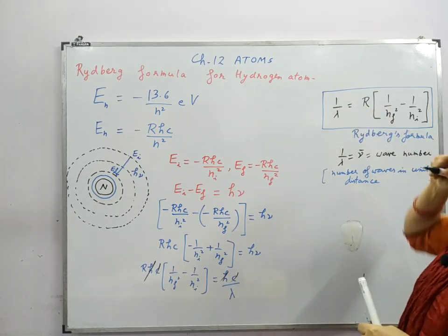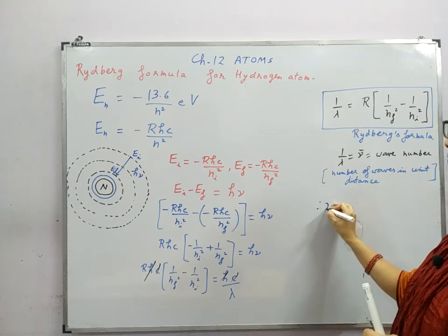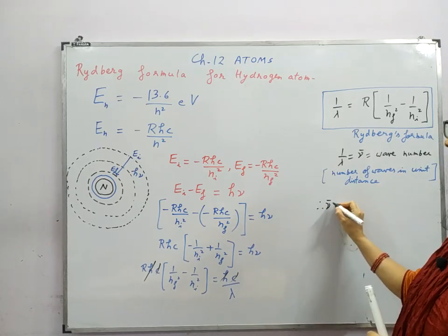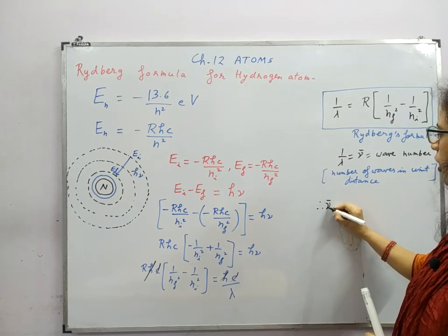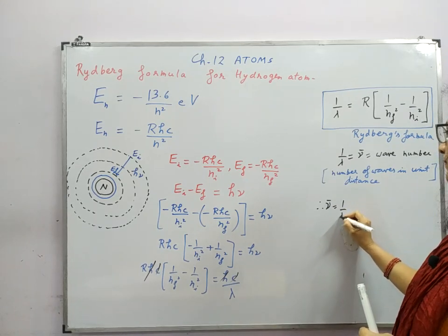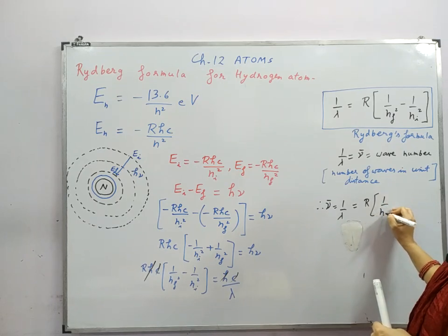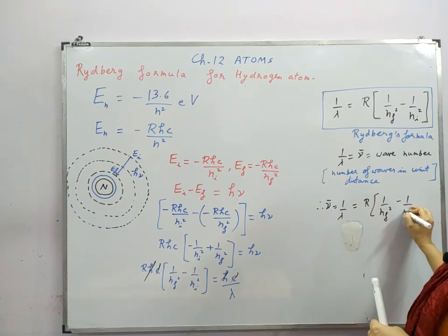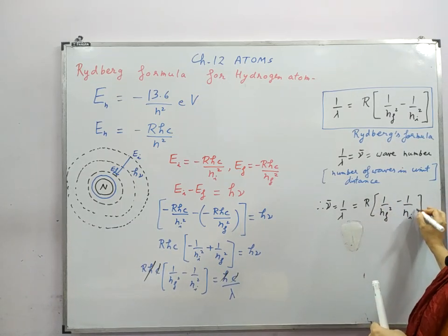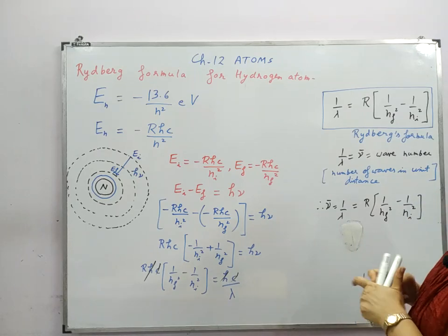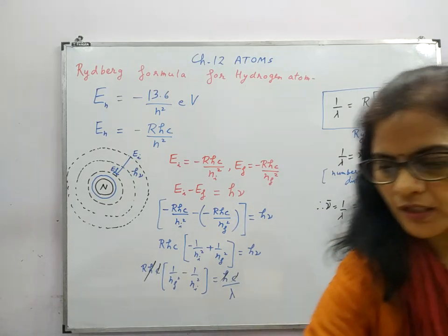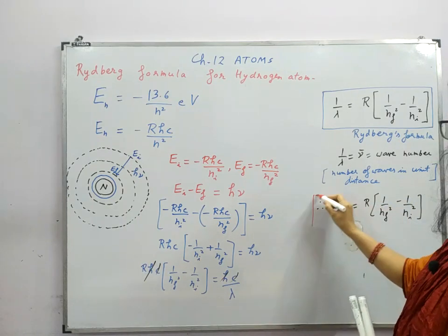So this can be modified as therefore nu bar or 1 by lambda can be written as R times 1 by n_f square minus 1 by n_i square. So this is another form of the Rydberg's formula for hydrogen atom.